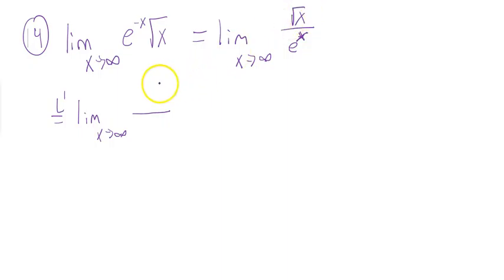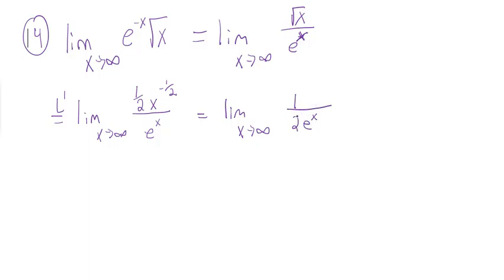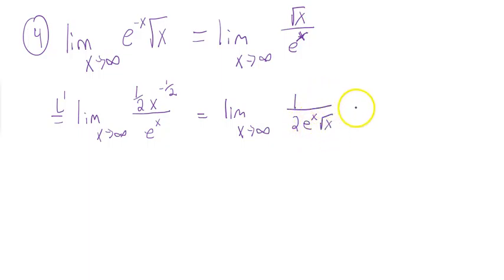The square root of x is x to the 1 half, so by the power rule the derivative is 1 half x to the negative 1 half. The derivative of e to the x is e to the x. I can simplify this algebraically: writing the 1 half as 1 over 2, e to the x on the bottom, and the x to the negative 1 half moves to the bottom as the square root of x. As I go to infinity, I'm looking at a small over big situation because my x's are on the bottom. Small over big is 0, and that is my answer.